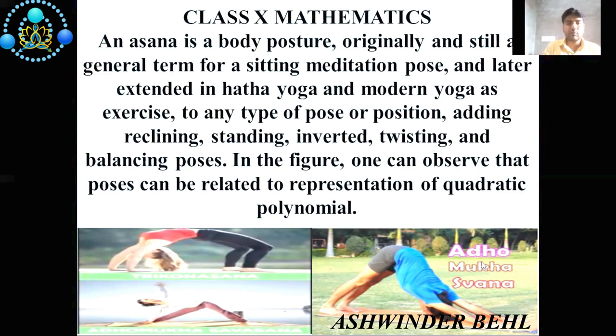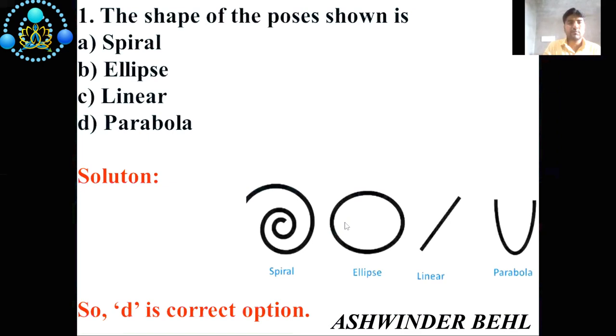On the basis of this picture, we have some questions. Now we'll start to solve these questions. Question number 1: The shape of the poses shown is (a) spiral, (b) ellipse, (c) linear, (d) parabola. So on the basis of this picture, answer d is the correct option.